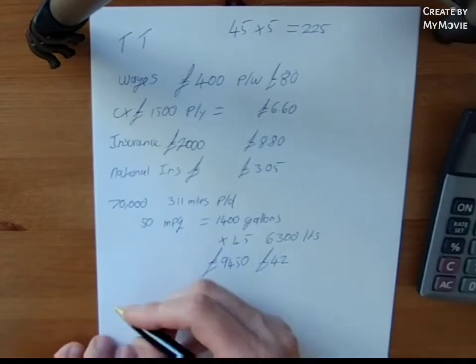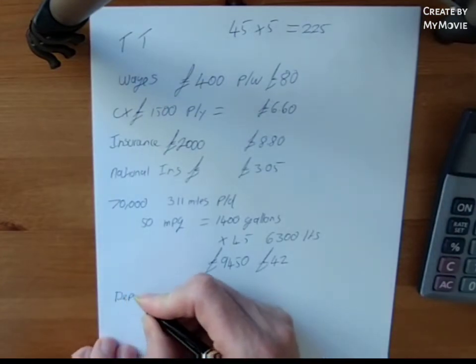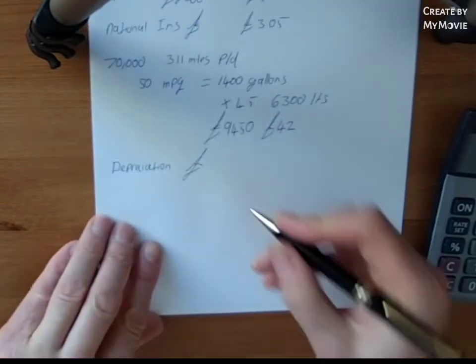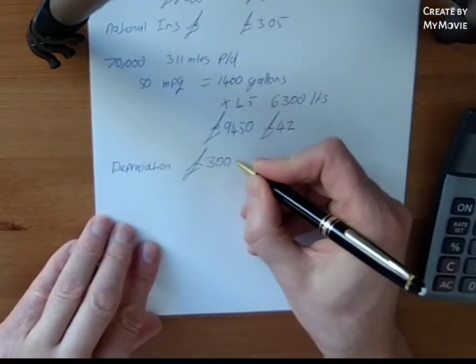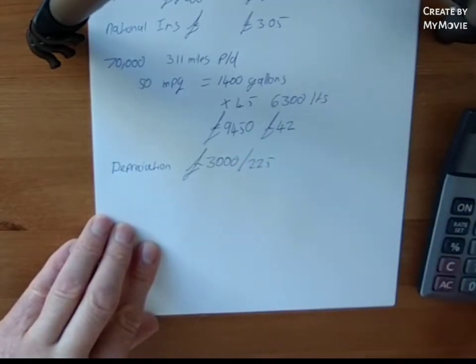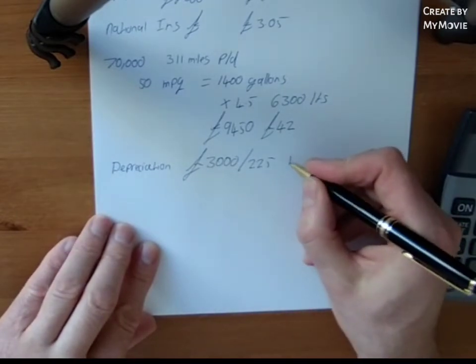And what other costs? We're going to have some depreciation. Let's say we've got £3,000 per year. Again, divide that by 225. It equals £13.30.